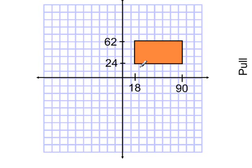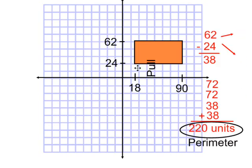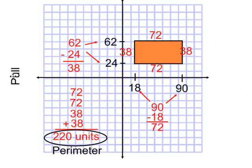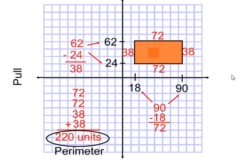Now look at this example. Let's figure out the base of this rectangle. To do that, we would have to subtract — we would subtract 90 and 18, so the base here would be 72. And to calculate the height, you would have to subtract 24 and 62 — our height would be 32. And then we would just add up the four sides of the rectangle, and the perimeter would be 220 units.